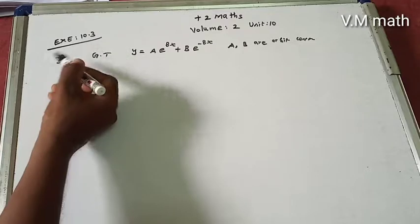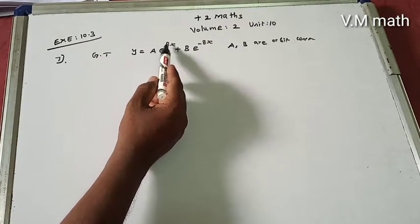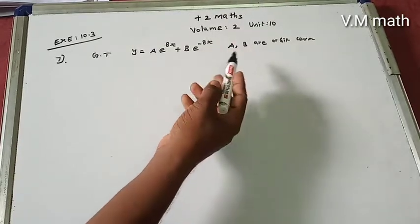Exercise 10.3, question 7. Given that y equals capital A times e to the power 8x plus capital B times e to the power minus 8x, where A and B are arbitrary constants.